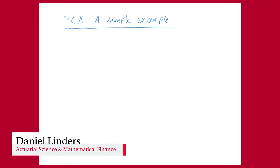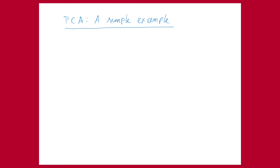I start with a data set with two observations. We have observation A, which is (2,1), and observation B, which is (1,2). So we have two observations and two variables. The first variable I call x1, the second is x2.